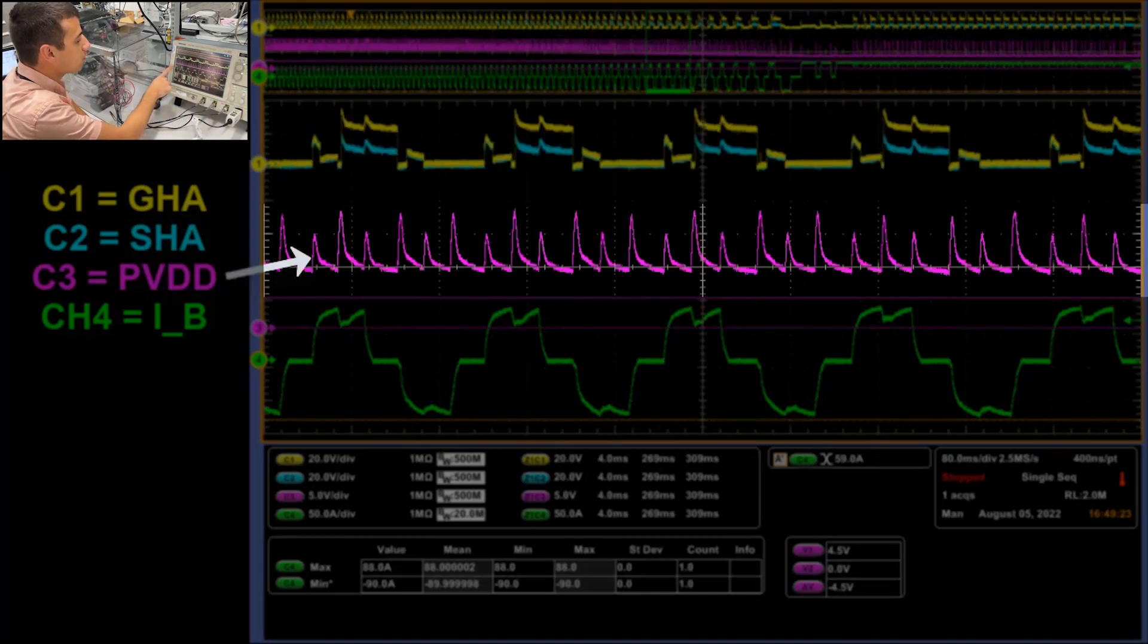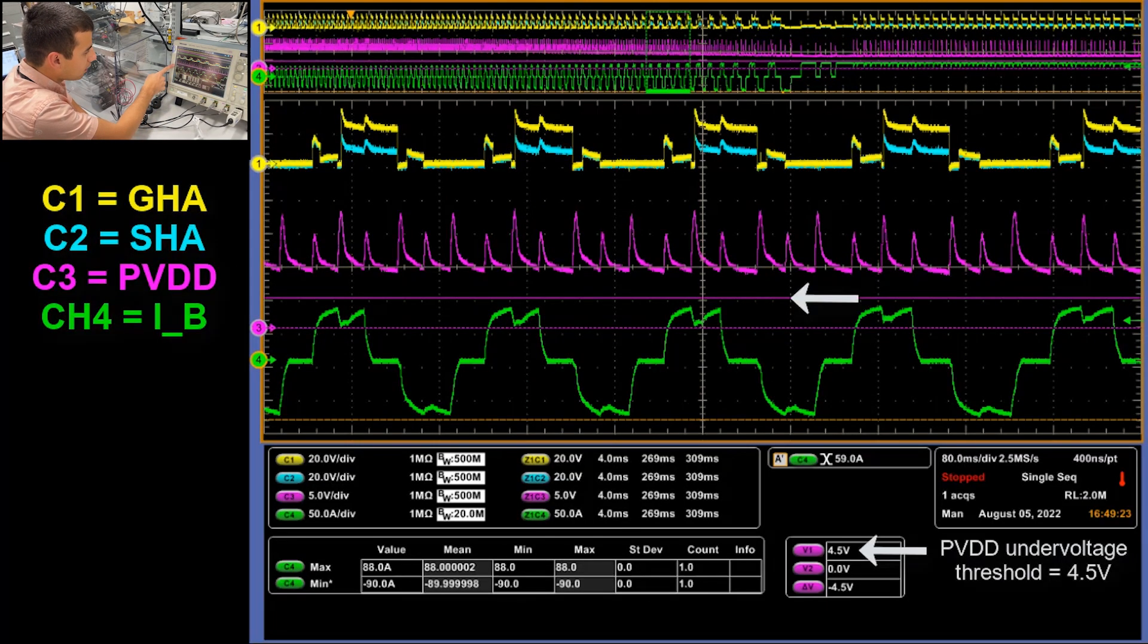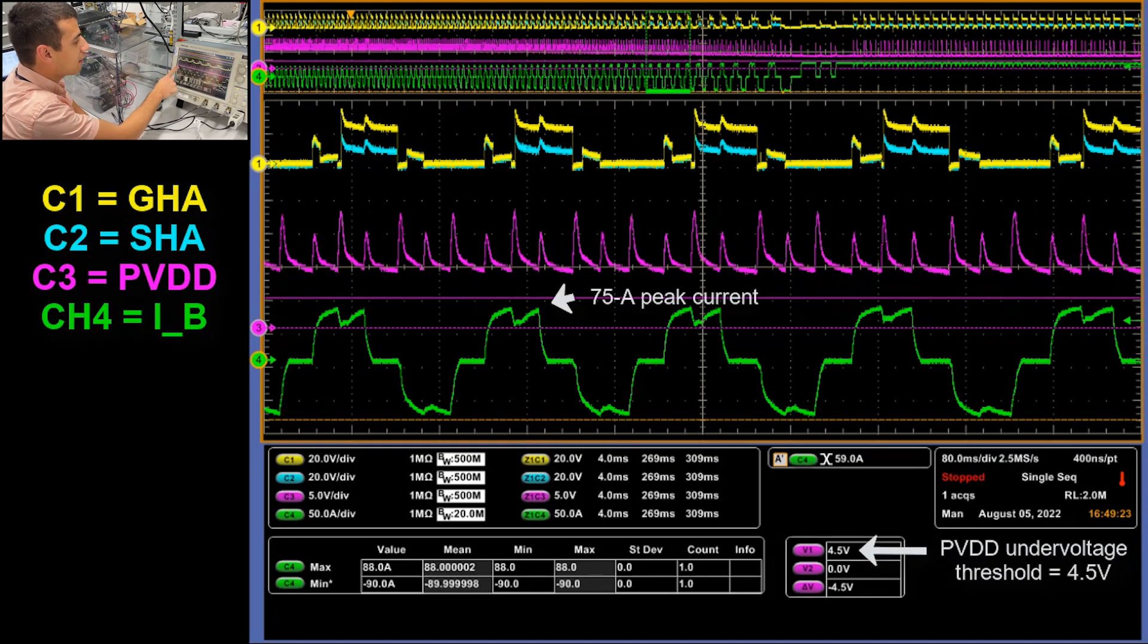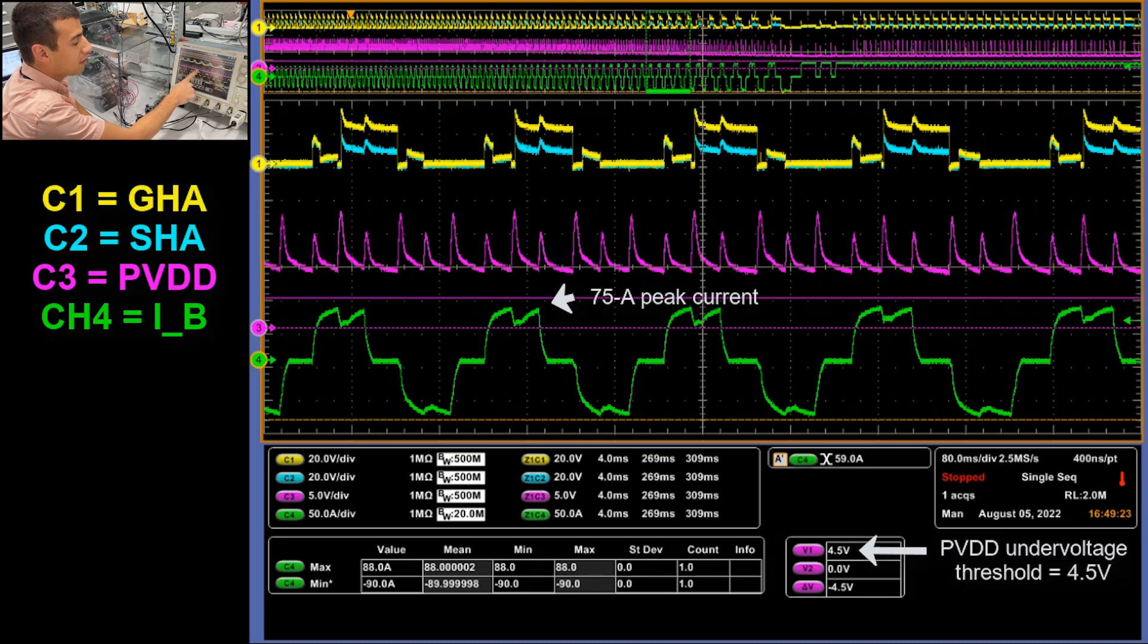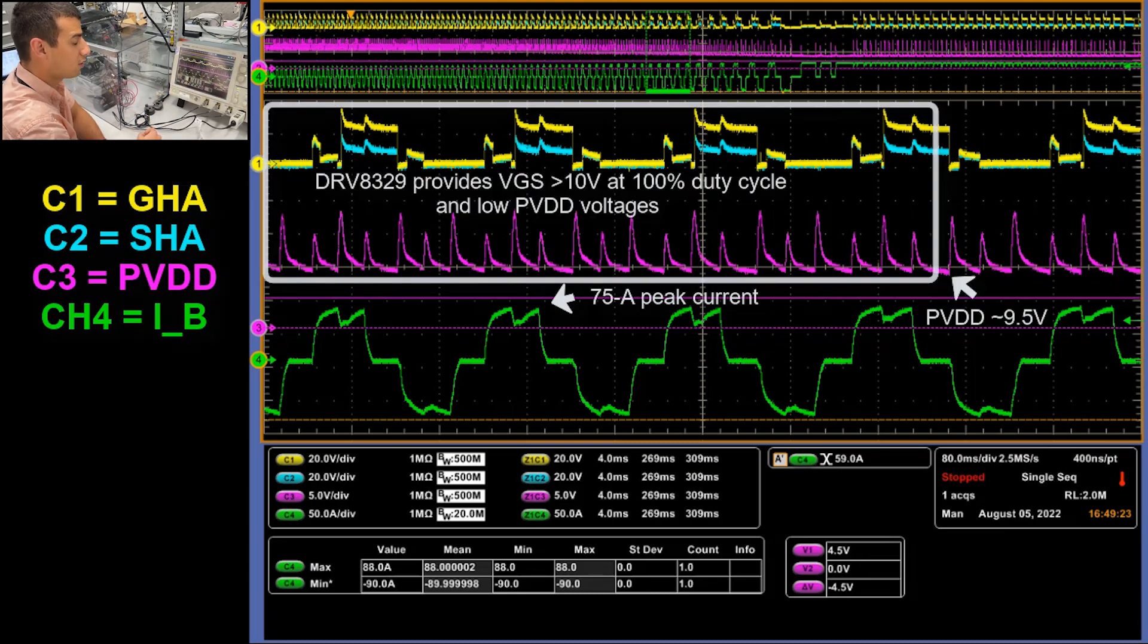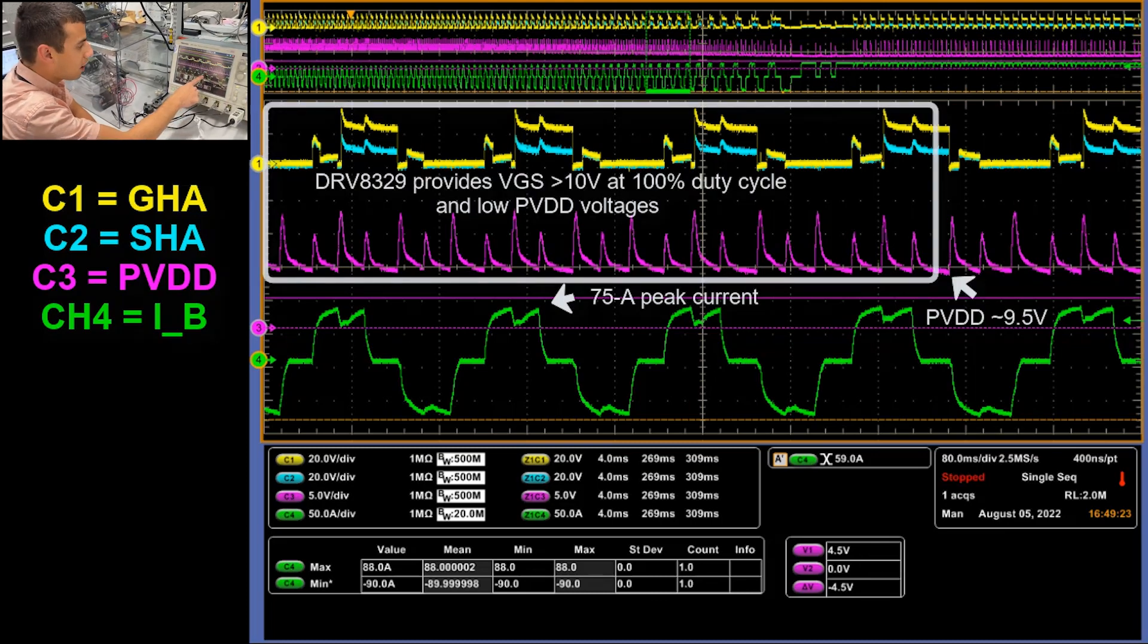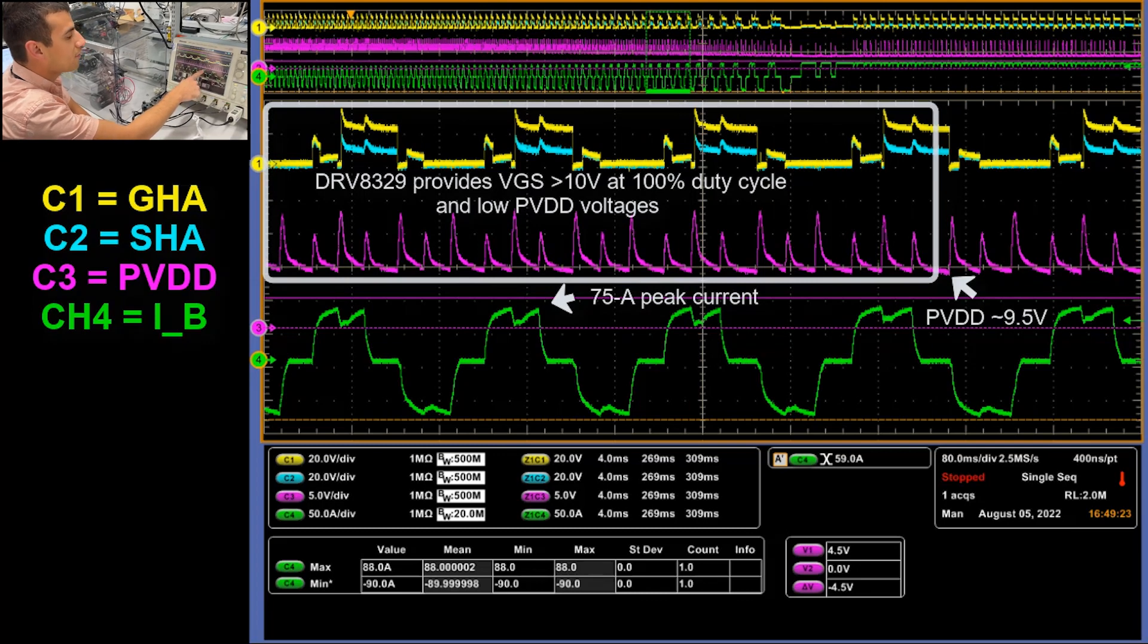Our PVDD voltage, this bottom cursor here, is 4.5 volts above zero volts. We can see that our PVDD voltage, our battery voltage, stays above this the whole time, avoiding an undervoltage lockout condition as we hit peak currents up to 75 to 80 amps.